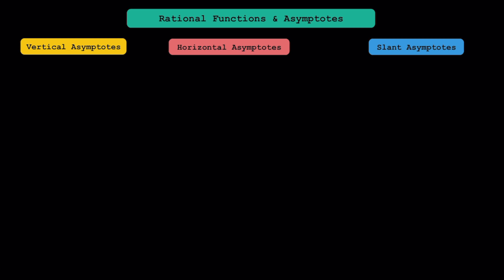Hey everyone! I hope you're doing well today. In this video, I'm going to be talking about rational functions and their asymptotes. The three asymptotes I'm going to be talking about are vertical asymptotes, horizontal asymptotes, and slant asymptotes.